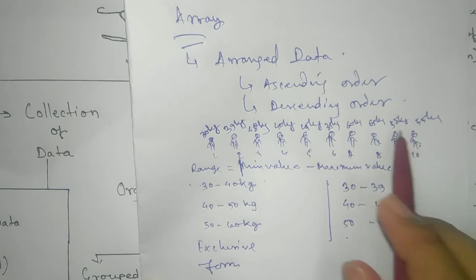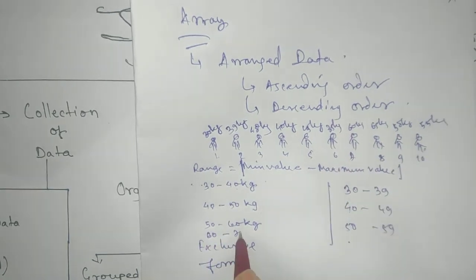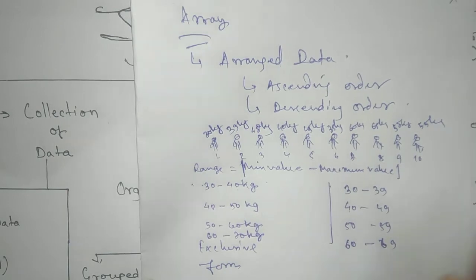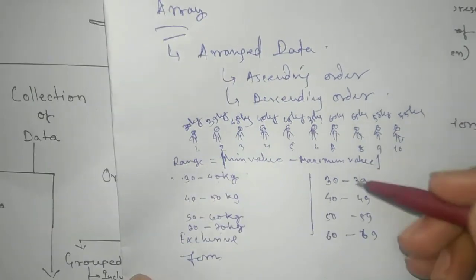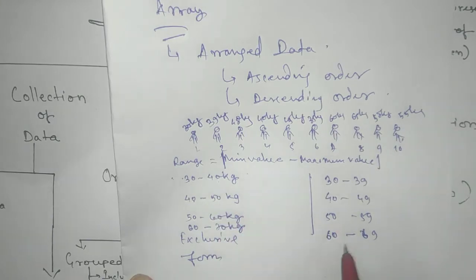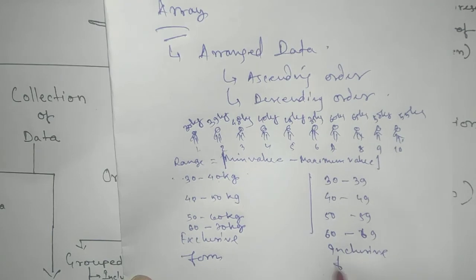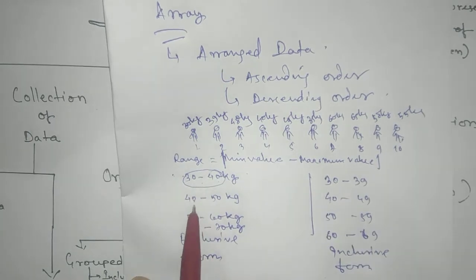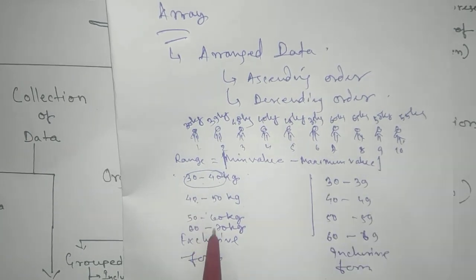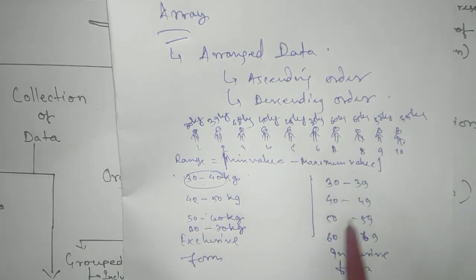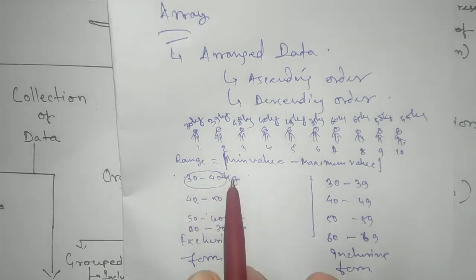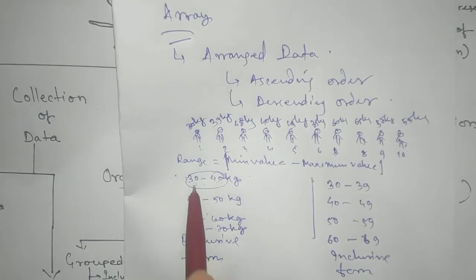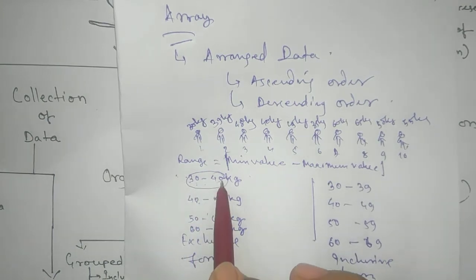And if there is any 60, yes there is a 60 also. So we are keeping 60 to 70. Again here 62, 69. Now you can see that this one is in inclusive form. And this one we call class interval. First class interval, third class, fourth. In each interval there is upper limit, this limit, this is your lower boundary, upper boundary.